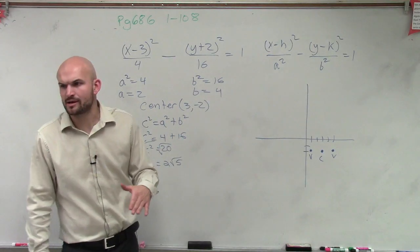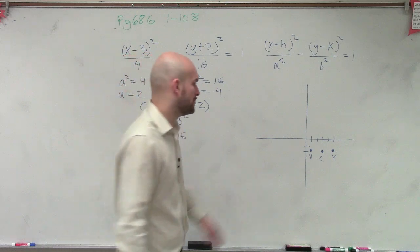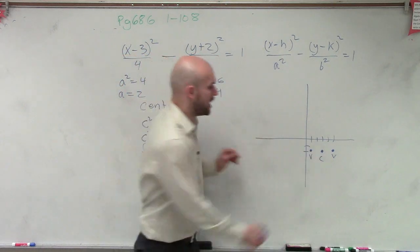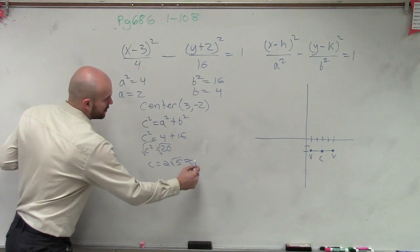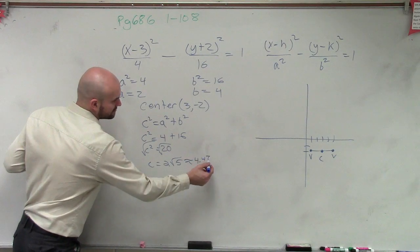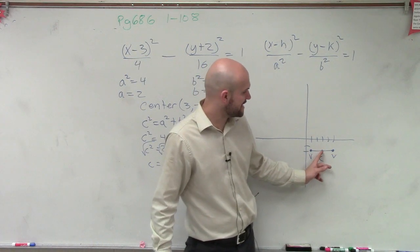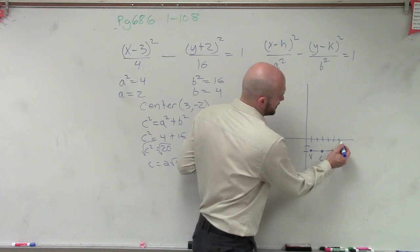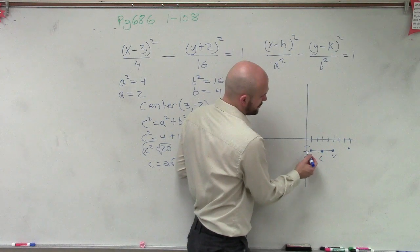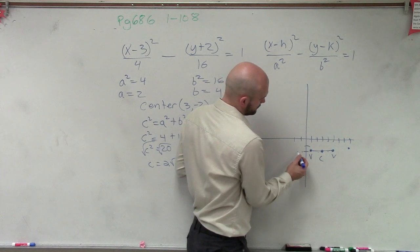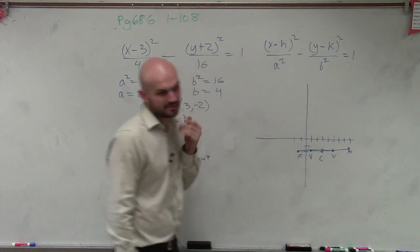Anybody have the decimal approximation so we can graph it? — 4.47. So remember, the foci all have to lie on this transverse axis. My c is approximately 4.47 — that's the distance from my center. So if I go over 4.47 to the right: 1, 2, 3, 4, 4.47 — and then to the left 4.47: 1, 2, 3, 4. So that's my foci, and that's going to be my foci.